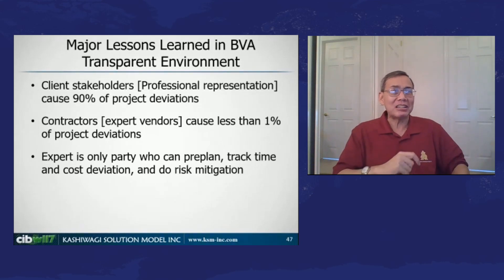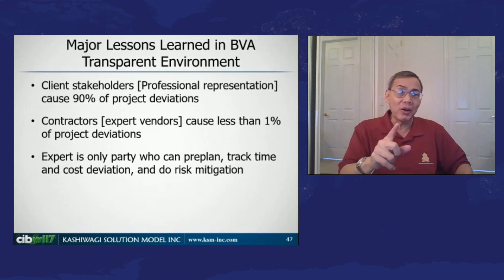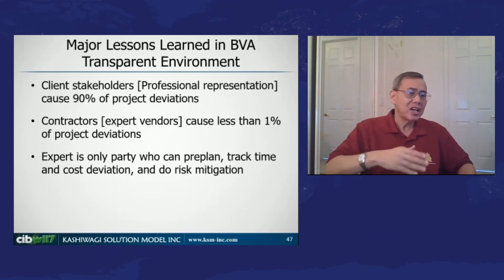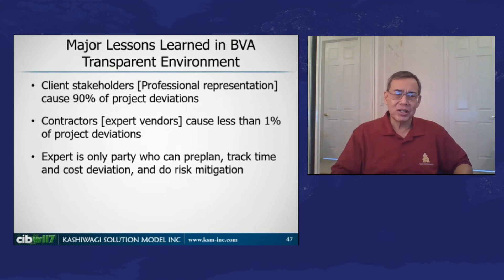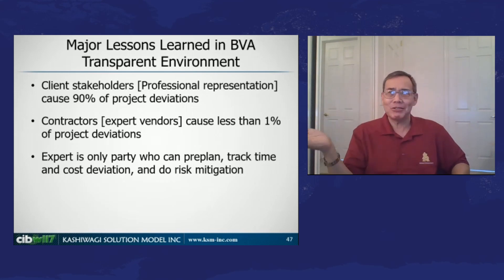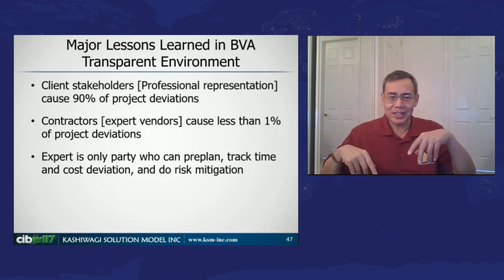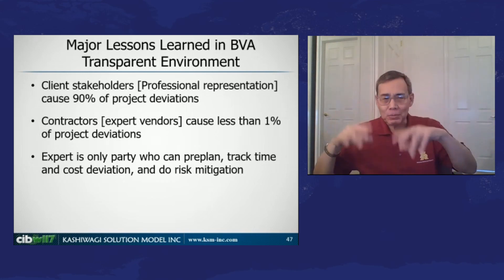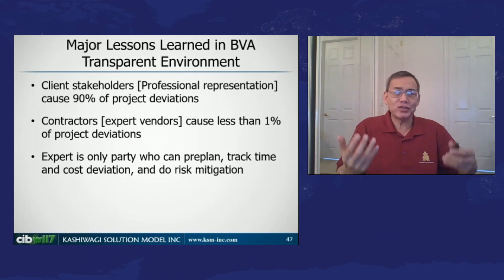So basically, we want to identify and utilize expertise, and the expert is the only one. Because they cause so little risk, we come to the conclusion that experts don't cause risk — we use that assumption. The only thing experts do regarding risk is mitigate it. They mitigate risk by advising the other party or the stakeholder on what to do to minimize having that risk happen. That's the best way, and experts can do this.